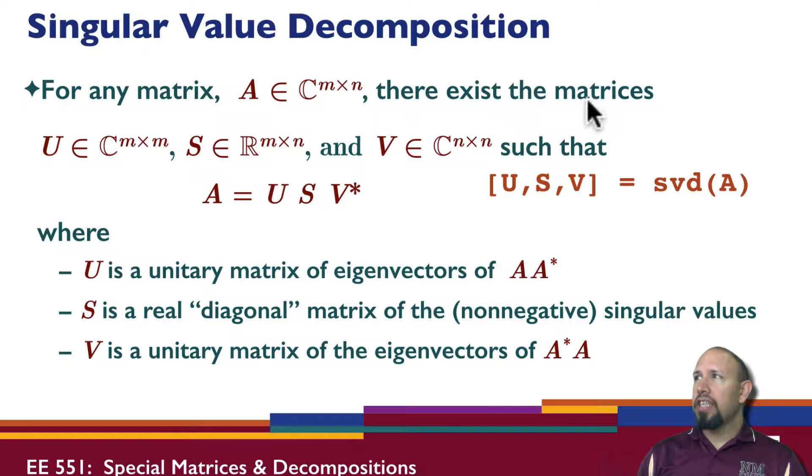For any matrix A, there exist the matrices U, S, and V such that A is equal to U times S times V adjoint. In MATLAB, we can use it this way. So what's going on with this? U is a unitary matrix, and it's a unitary matrix of the eigenvectors of this quantity, A times A adjoint. Remember, A itself may not be square, but when you multiply A by A adjoint, you will get a square matrix.